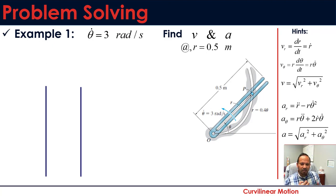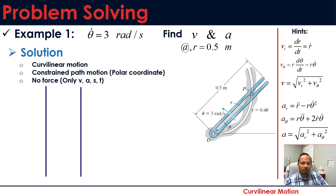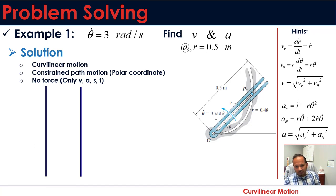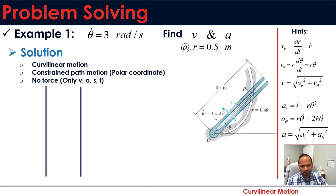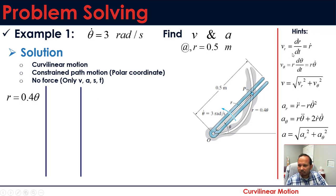To solve, note the hints: r, theta, and theta_dot are given, and no force is involved, so this belongs to kinematics of a particle. The peg moves along a curved constrained path, confirming curvilinear motion. Since the problem is on a plane, we use the polar coordinate system and refer to our velocity and acceleration formulas.